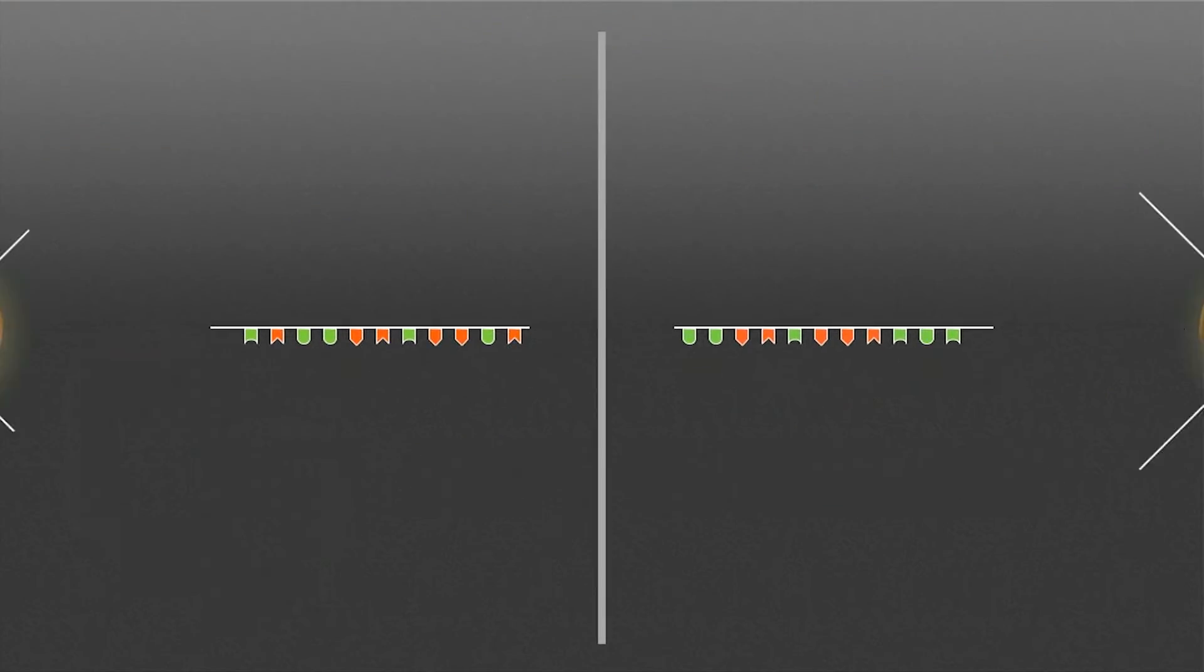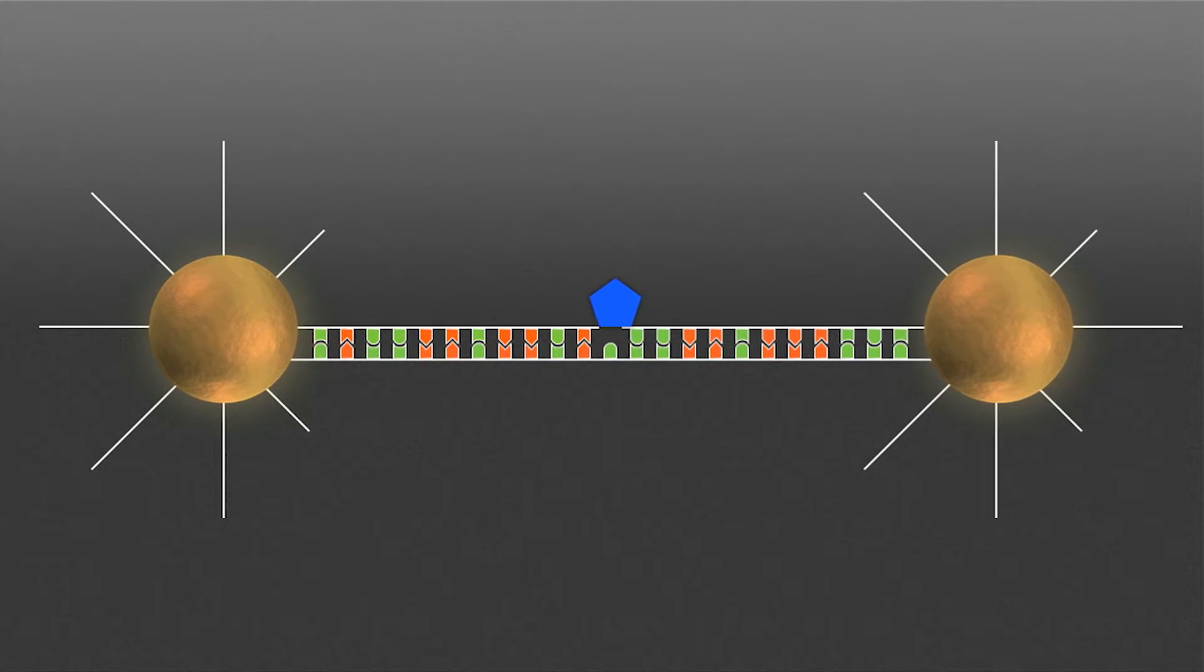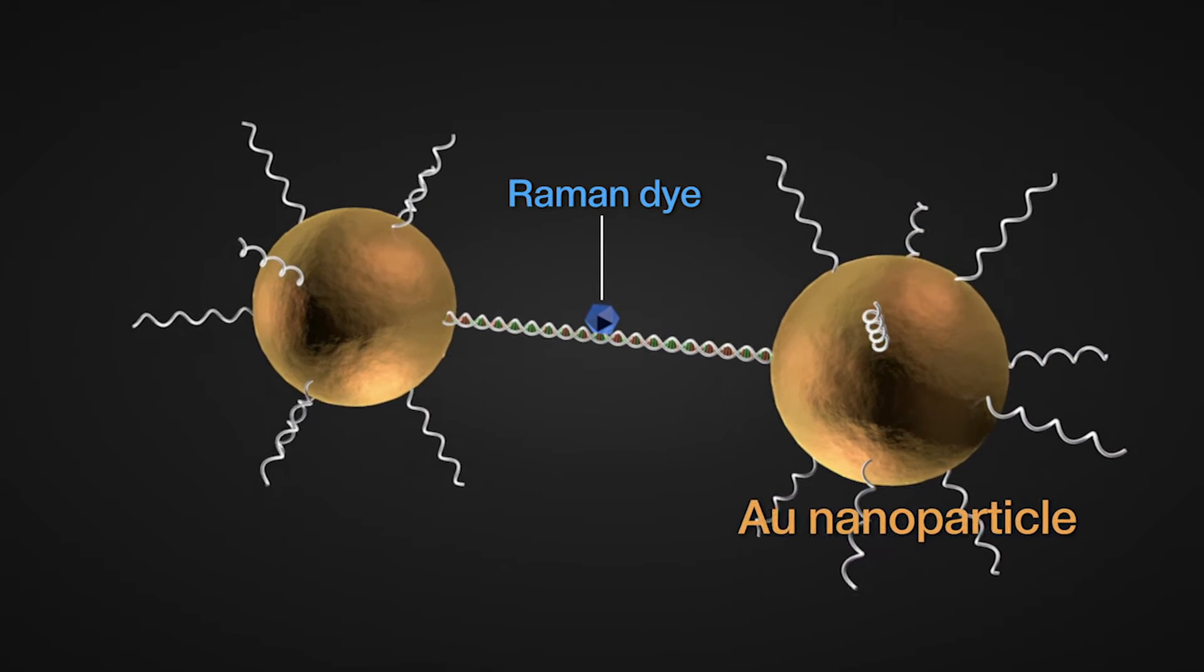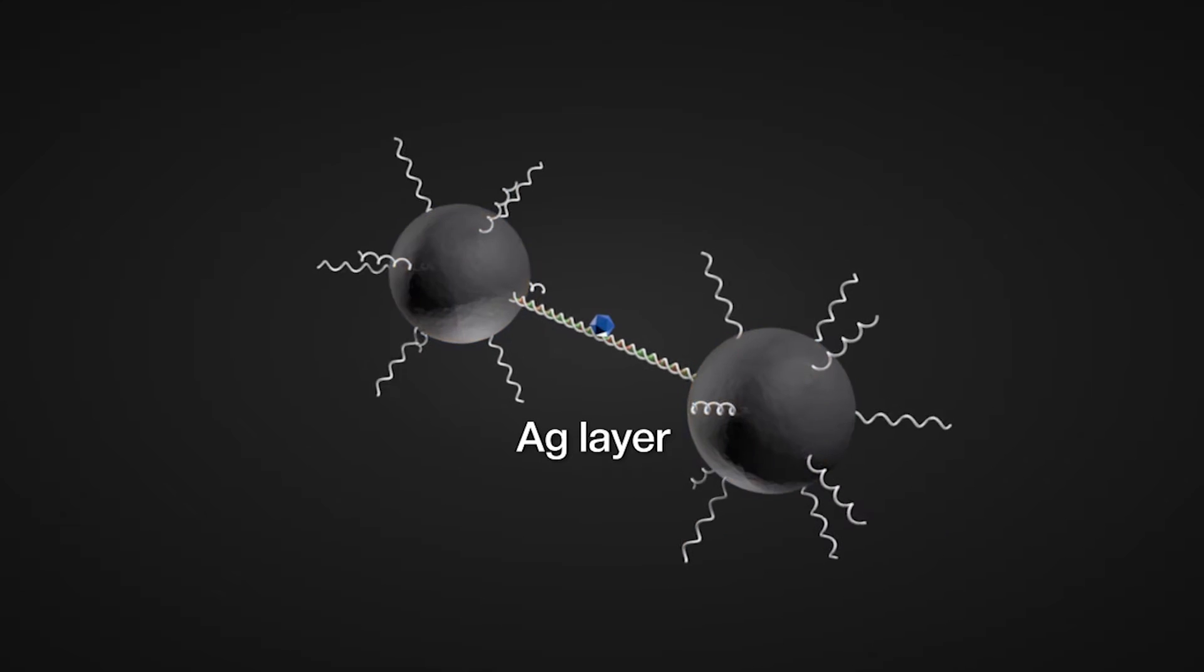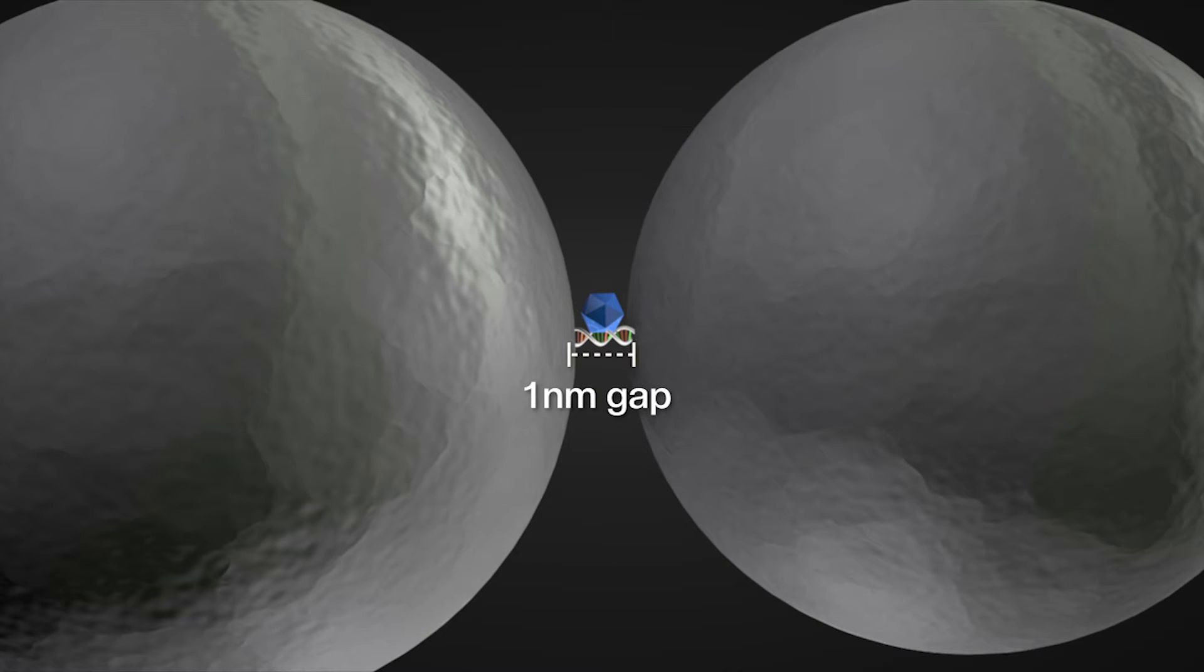This team initially tied two gold nanoparticles with double-strand DNAs where a single Raman dye molecule is tagged at the center of the DNA, and then coated the now-connected gold heterodimer nanodumbbell cores with silver shell to form a less than 1 nanometer nanogap to sandwich the single Raman dye molecule in between.